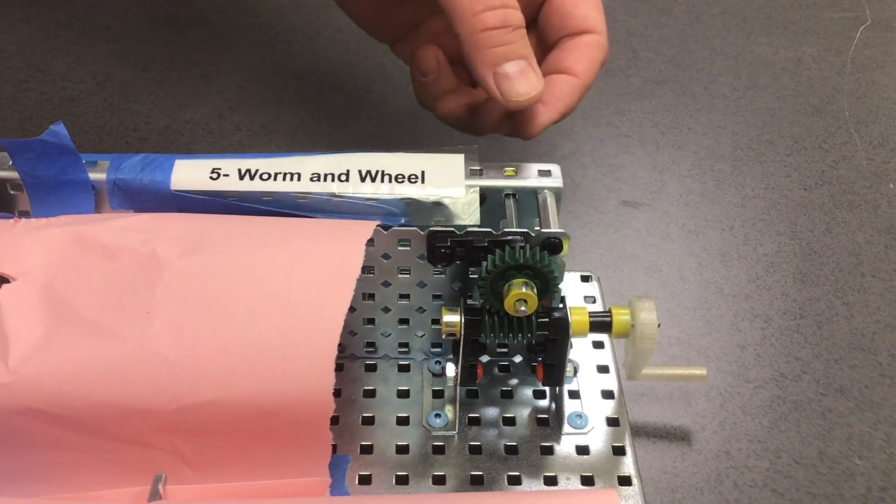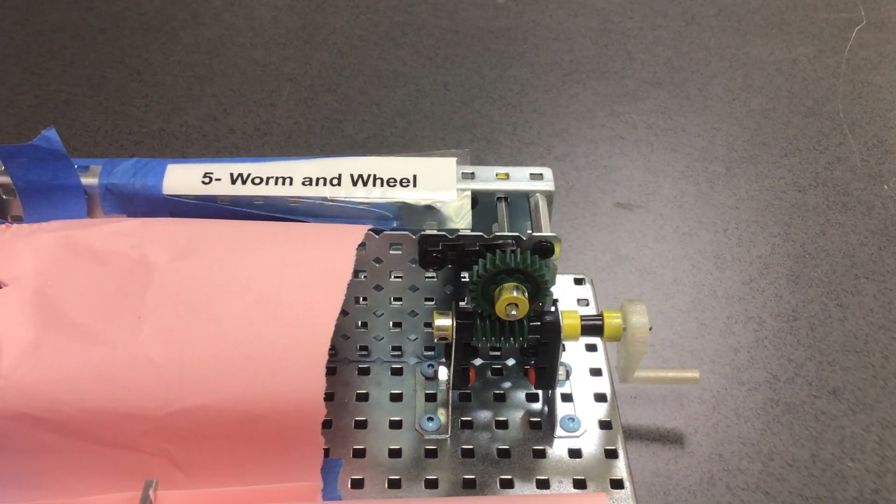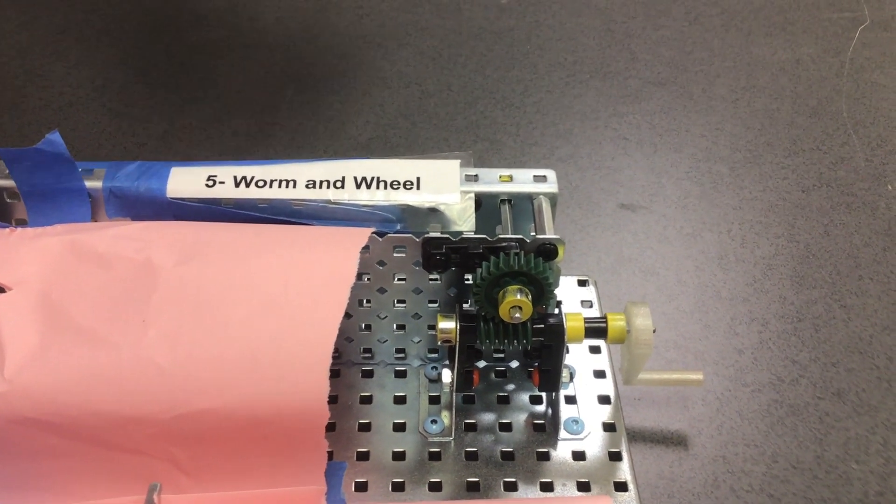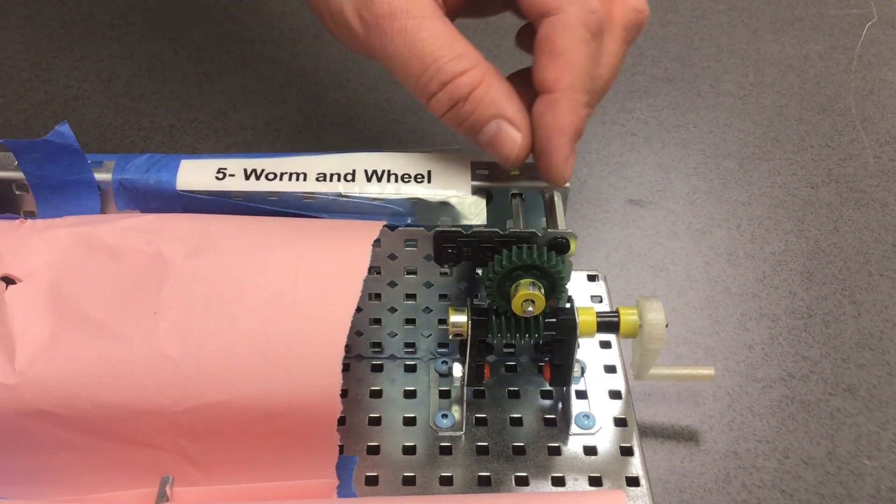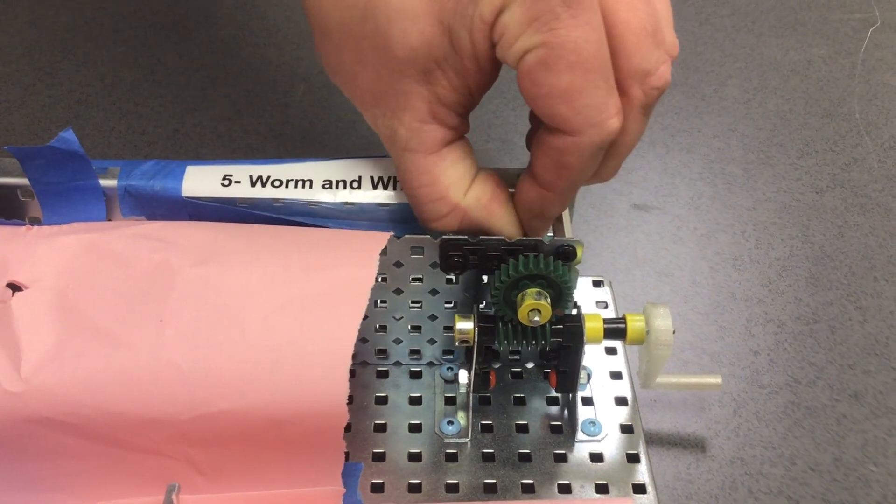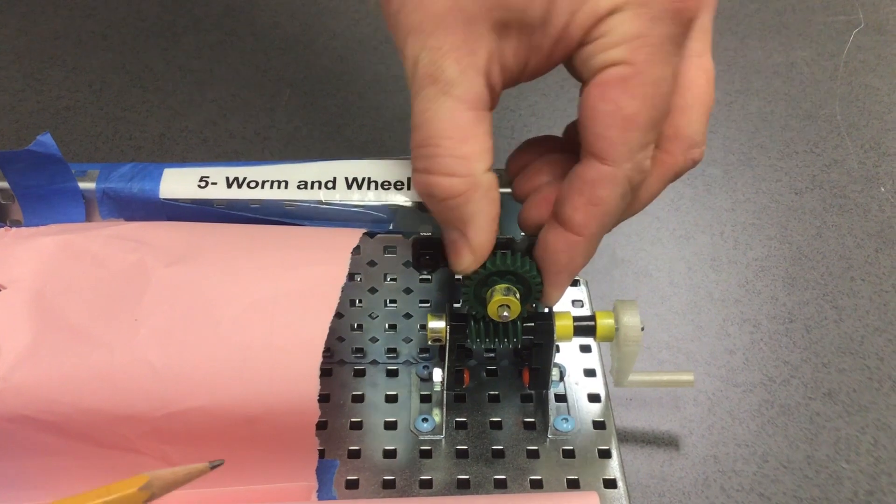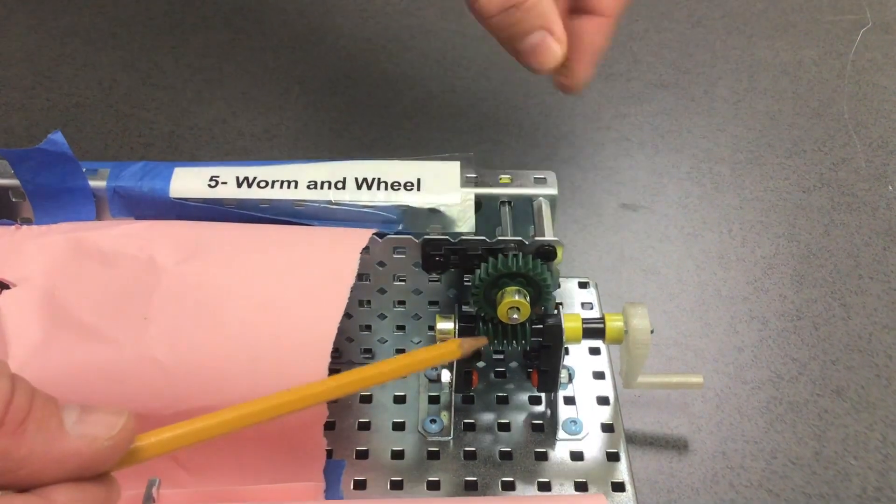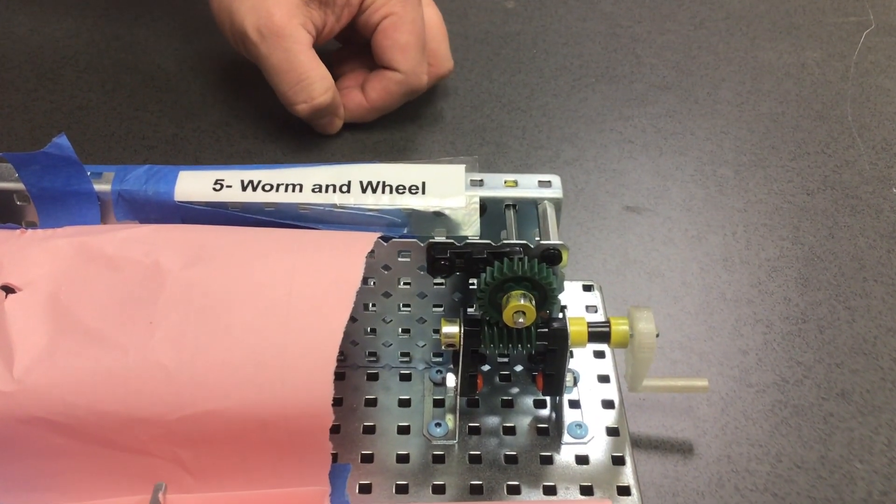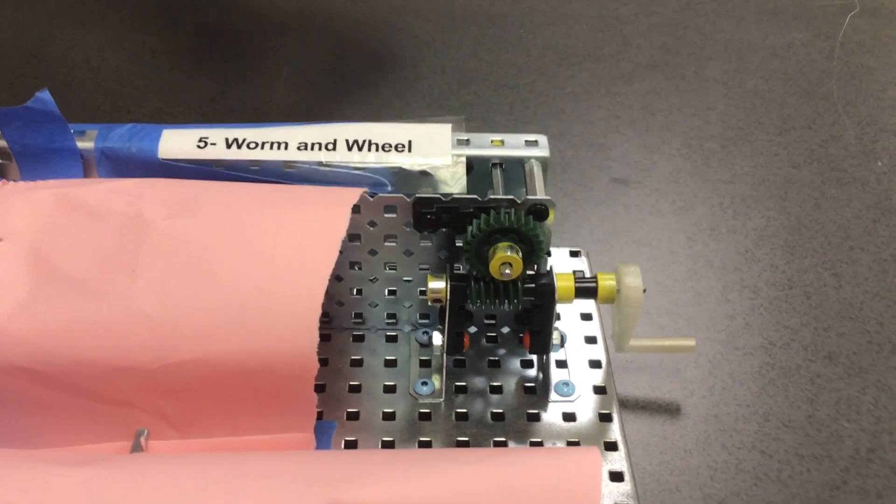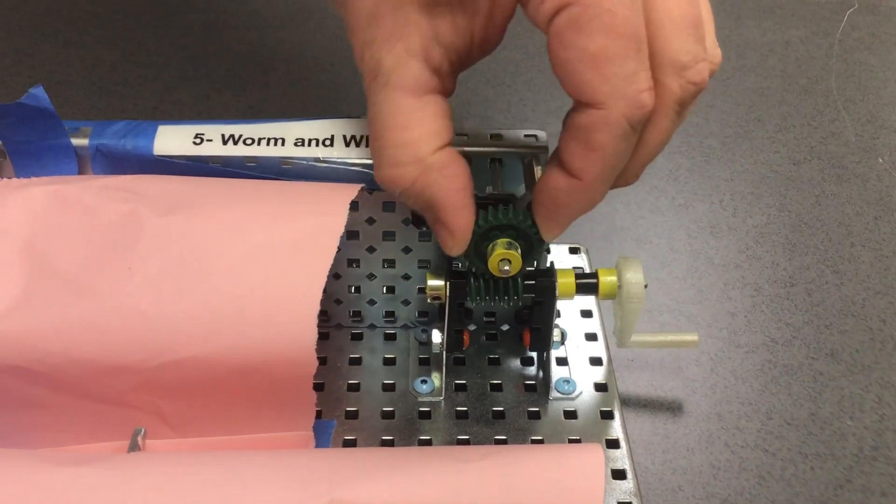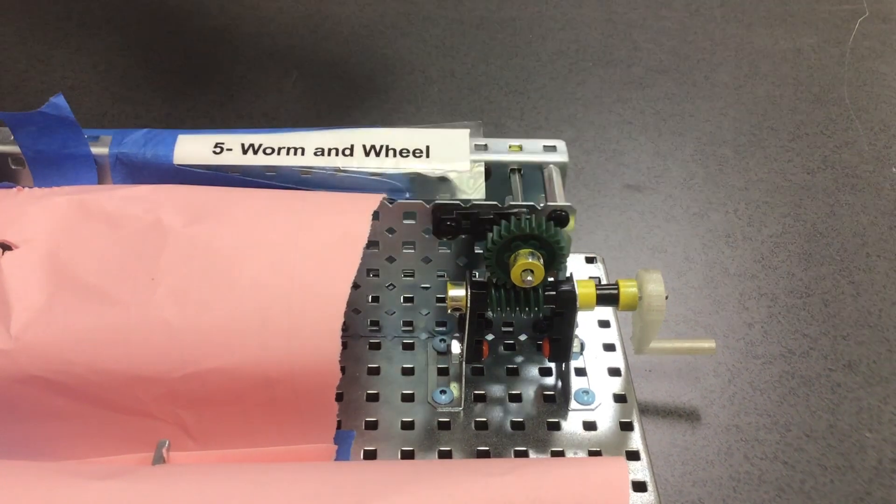The flow of power on this, which is can you make the input shaft turn by turning the output, is not turnable. I'm trying to turn this and I just can't make this turn. Even if I push on this I just can't make that worm turn. So the flow of power is not reversible no matter how hard I try. In fact, I'll break it if I try to.